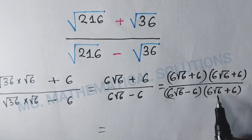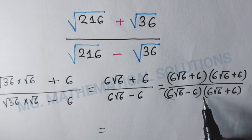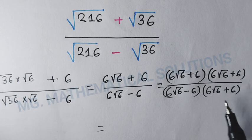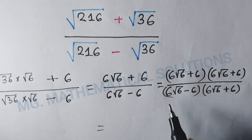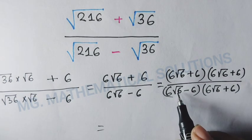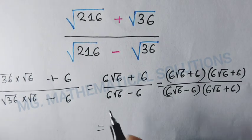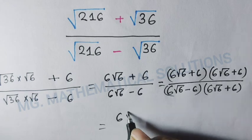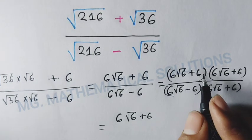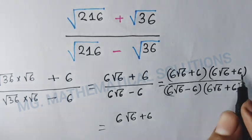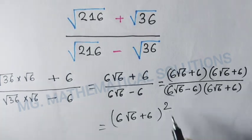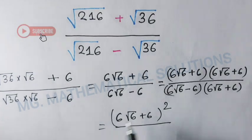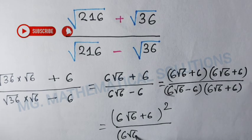The denominator uses the formula (a + b)(a - b) = a² - b², where a = 6√6 and b = 6. So the denominator becomes (6√6)² - 6². The numerator becomes (6√6 + 6)².